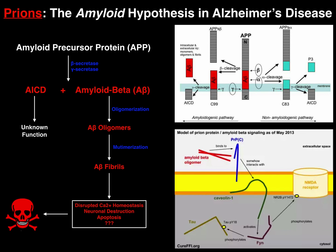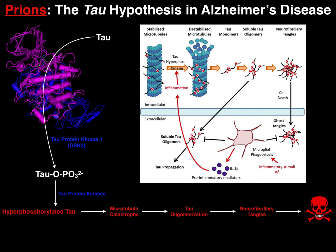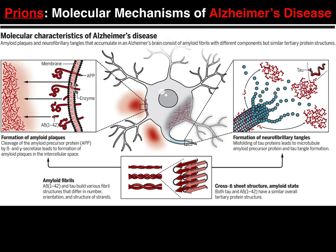These are the two leading hypotheses for the progression of Alzheimer's disease. Hopefully this video provided insight into the molecular mechanisms of how Alzheimer's develops and progresses into eventual neurodegeneration and death. Please like this video and subscribe for future videos and notifications. Thank you very much.